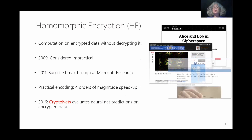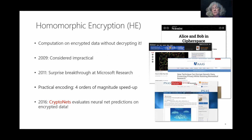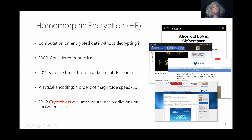Homomorphic encryption was an open problem for several decades. In 2009, the first solution was proposed by Gentry, which was considered fairly impractical and unimplementable. Computer scientists worked very hard over the next couple of years to come up with more practical solutions. In 2011, there was a surprise breakthrough from researchers on my team at Microsoft Research proposing a homomorphic encryption scheme now used worldwide in almost all homomorphic encryption libraries. We also introduced at that time a different approach to encoding data, which made homomorphic encryption much more practical, leading to about four orders of magnitude speedup.